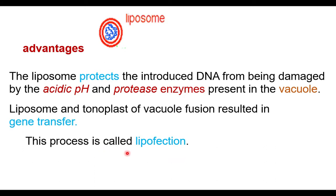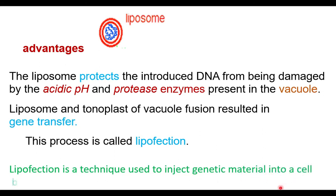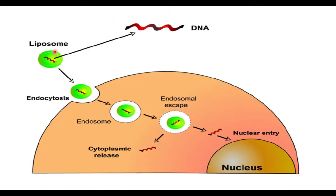This process is called lipofection. Lipofection is a technique used to inject genetic material into a cell by means of liposomes. The liposome with DNA inside is encircled by the cell membrane, forming an endosome. The endosome matures, opens, the DNA escapes and enters the nucleus. In this way, the gene is directly transferred without any vector.